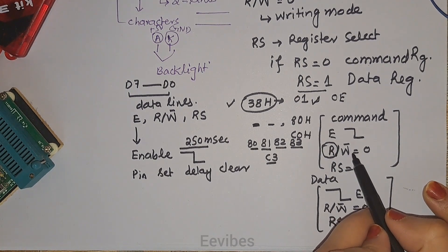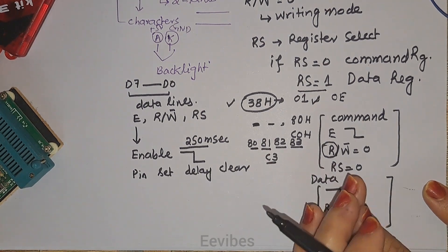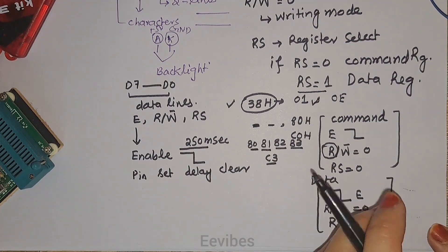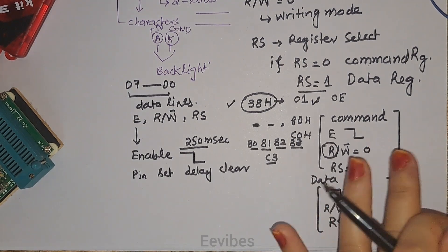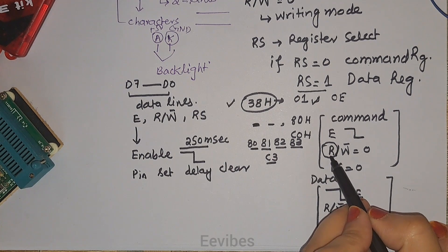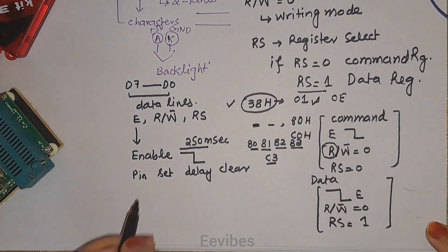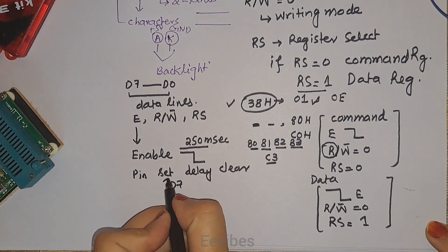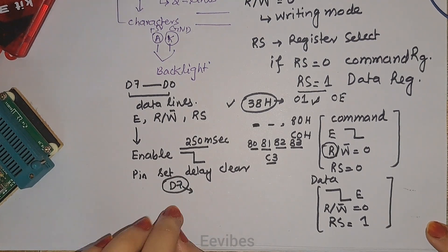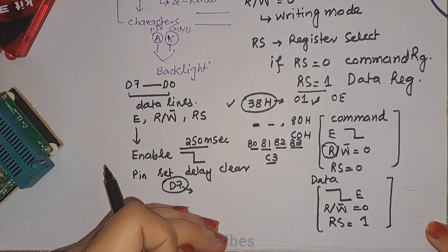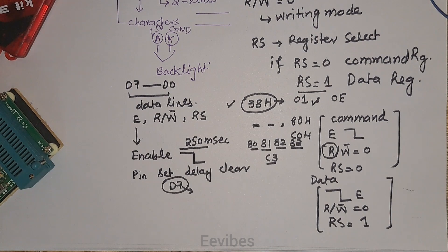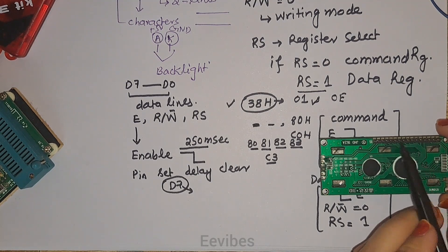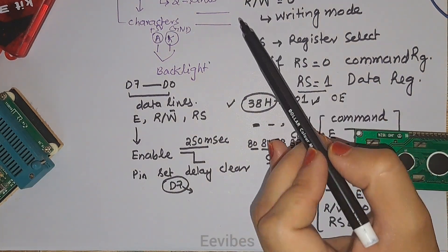When we make R/W equal to 1 — the read mode — this is used when you want to issue data to the LCD without introducing delays, or when using the busy flag. In read mode, the LCD reads the status of the D7 pin. If it is low, it will send the next character to be displayed. This is all about the LCD pins.